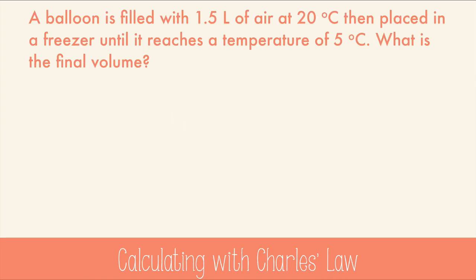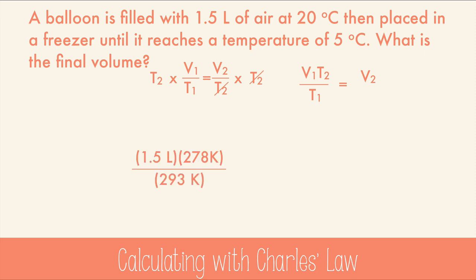Let's try a problem. A balloon is filled with one and a half liters of air at 20 degrees Celsius, then placed in a freezer until it reaches a temperature of 5 degrees Celsius. What's the final volume? Well, let's rearrange Charles' law to find V2. I'm getting rid of T2. We plug in our data after we convert to Kelvin, of course. And you get 1.4 liters, which makes sense because volume and temperature are directly related.